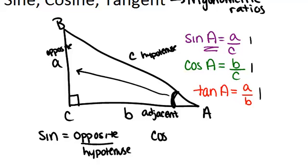Cosine is always adjacent over hypotenuse. So you can see why cosine for angle A was b, which is the adjacent side, over c, which is the hypotenuse.